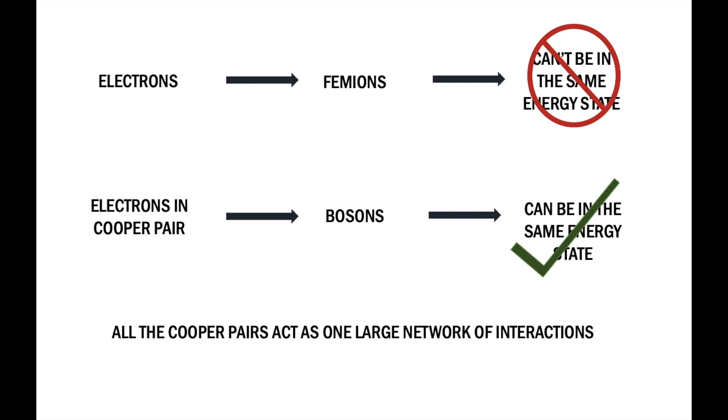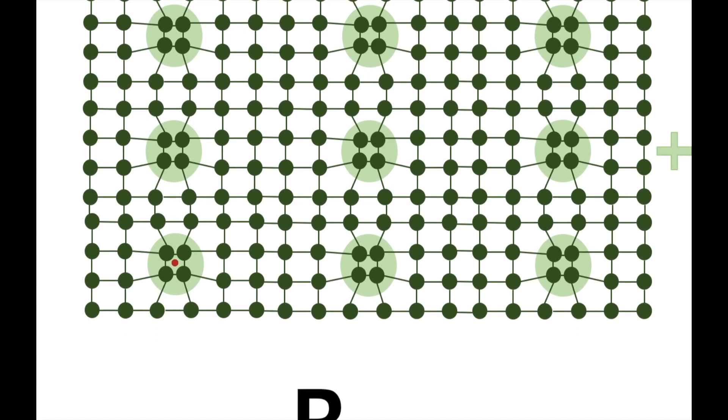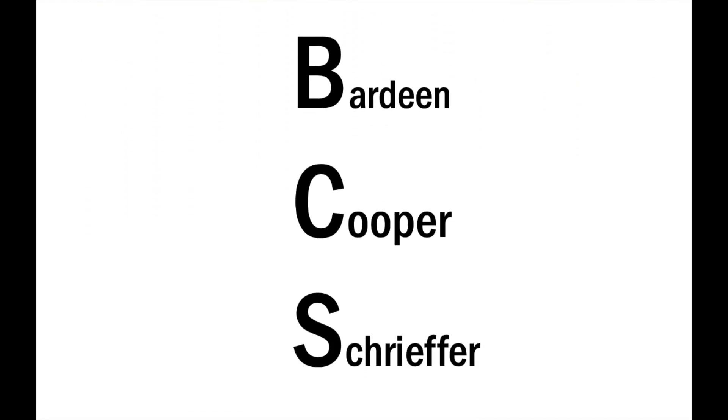These Cooper pairs are bonded over large distances. Therefore, they all become entangled and overlap to form one large network of interactions. This behavior prevents collisions from occurring, leading to no resistance. This theory is called the BCS theory, the name coming from the three people that helped form it.